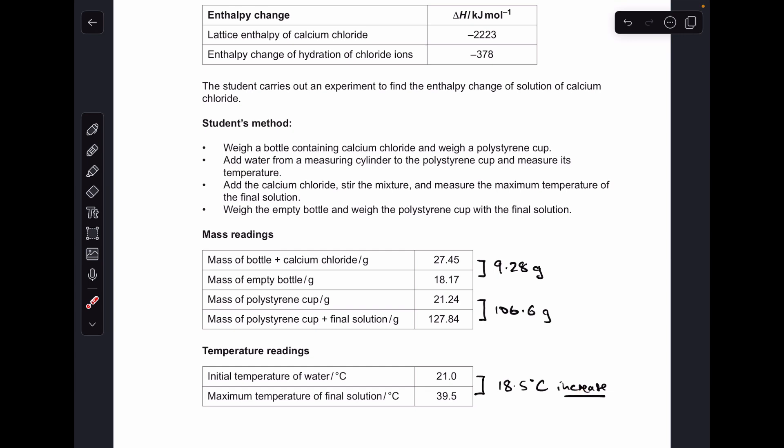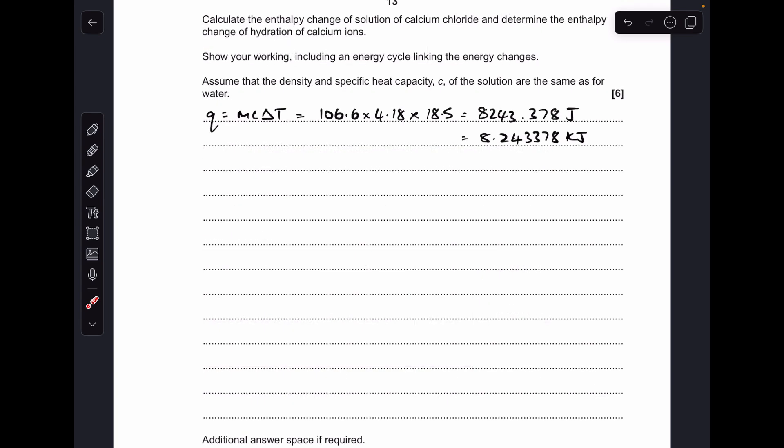And the temperature change is an increase. It's important because it obviously means it's an exothermic enthalpy change of solution, 18.5 degrees C. So the first thing we're doing is calculating Q, the energy that's gone into the water using MC delta T. Mass of solution 106.6, and the specific heat capacity C for the solution we're told to be the same as water, so 4.18.